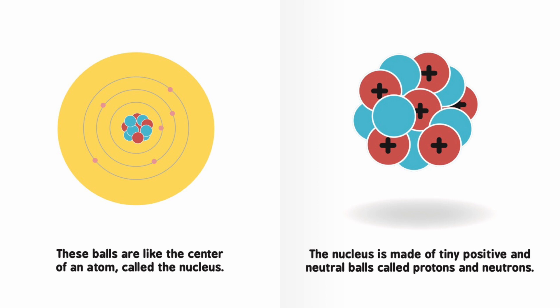These balls are like the center of an atom called the nucleus. The nucleus is made of tiny positive and neutral balls called protons and neutrons.